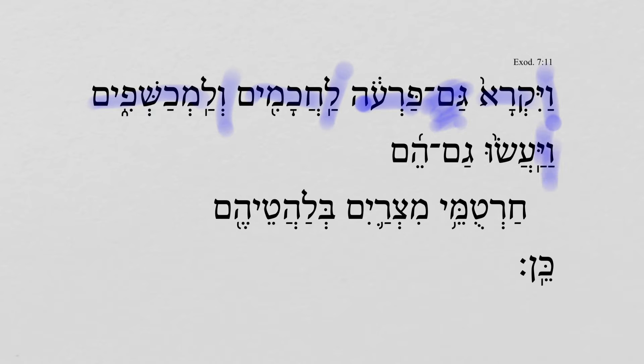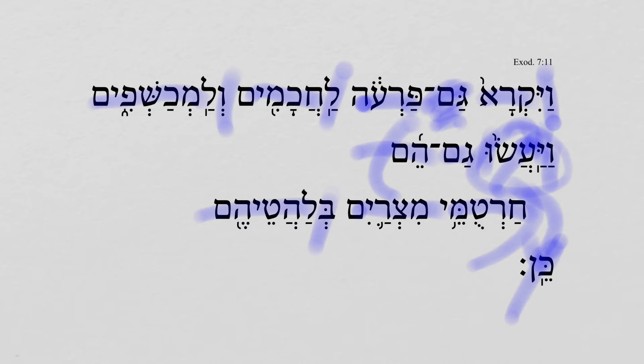And they — even they, that is, the wizards of Egypt — by their sorceries, they did thus. Notice here we have kind of a separation: 'they did thus,' with all of this intermediate speaking of the subject of the verb.